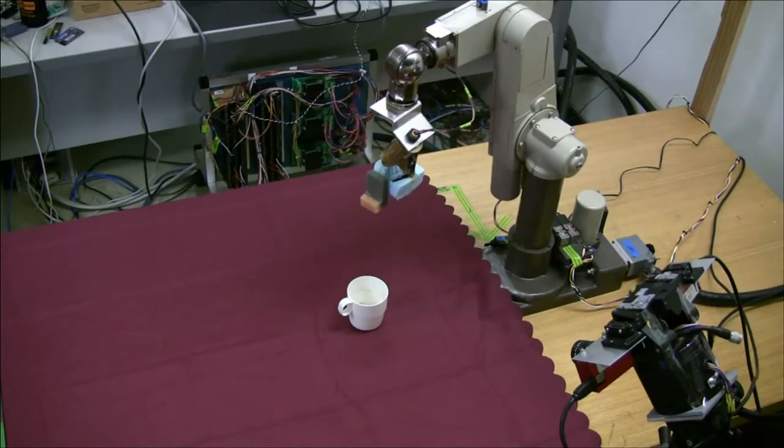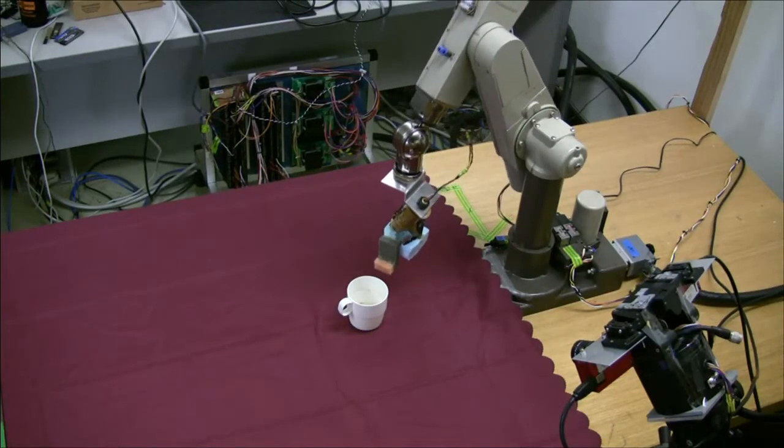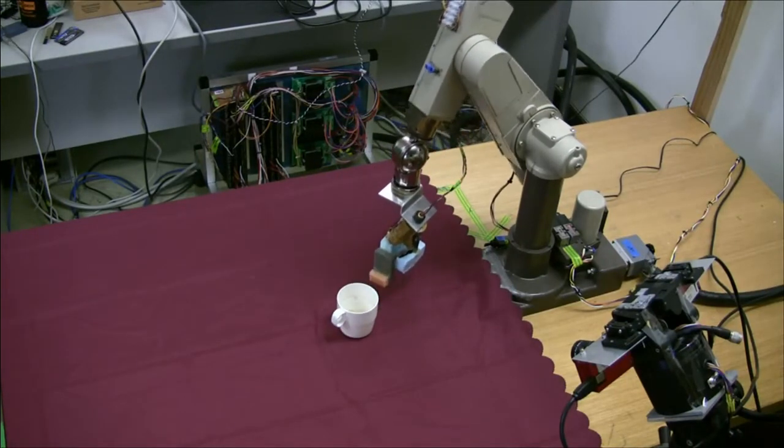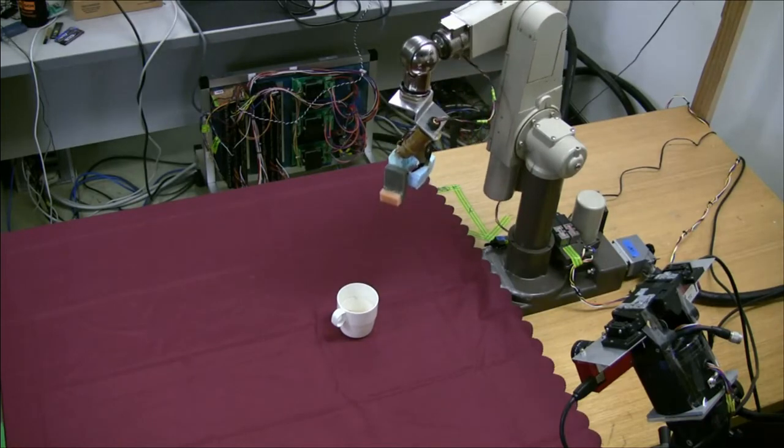Similarly, the system can deal with what we call near-symmetric objects in the paper, where near-symmetry is defined as an object that has slight asymmetries, such as a mug with a handle.